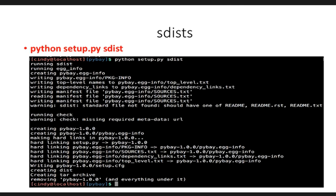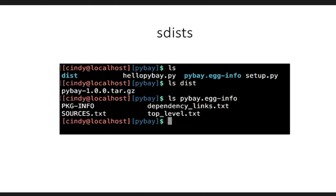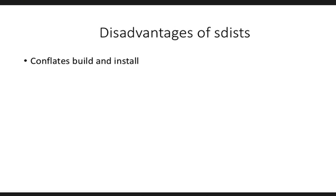Other people can download that package and use your code. What are some disadvantages of sdists? The first thing is that it conflates build and install. You're taking all your source files, creating a tarball, and throwing it on PyPI. But if I want to install your package, I have to download it from PyPI, then build the source myself, then install it. If your package pulls in five other packages from PyPI, I have to grab all those dependencies myself. So essentially I am executing code — running someone else's setup.py — which you don't necessarily want when just trying to pull a package.